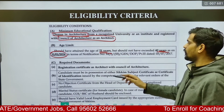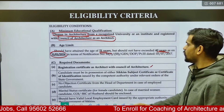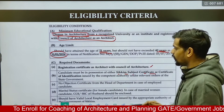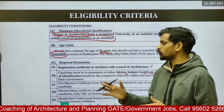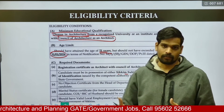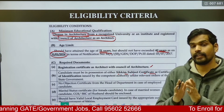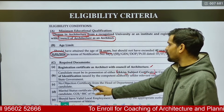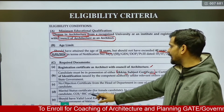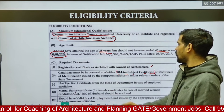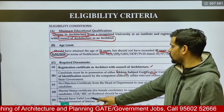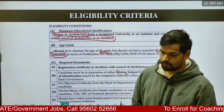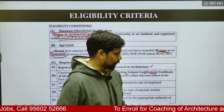The documents required for the application include a registration certificate with the Council of Architecture, and a Sikkim subject certificate or certificate of identification issued by the state government of Sikkim — indicating state domicile is required. You should also possess an NOC if employed, a marriage certificate if married, and a local employment card issued by the appropriate authority of the Government of Sikkim.